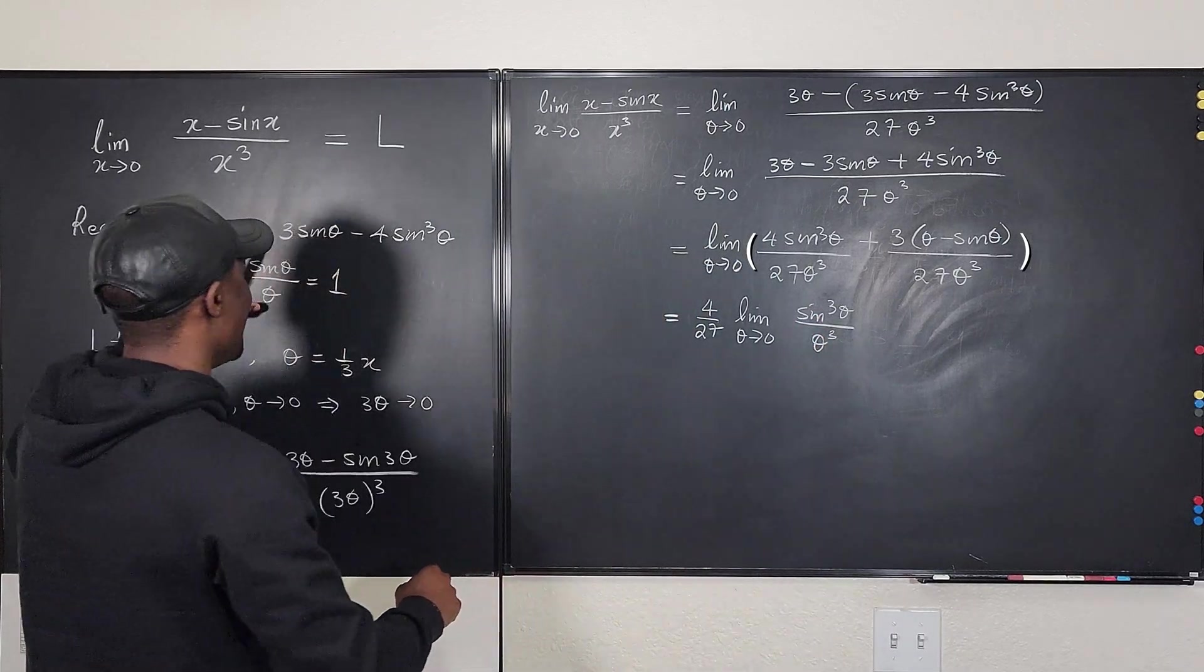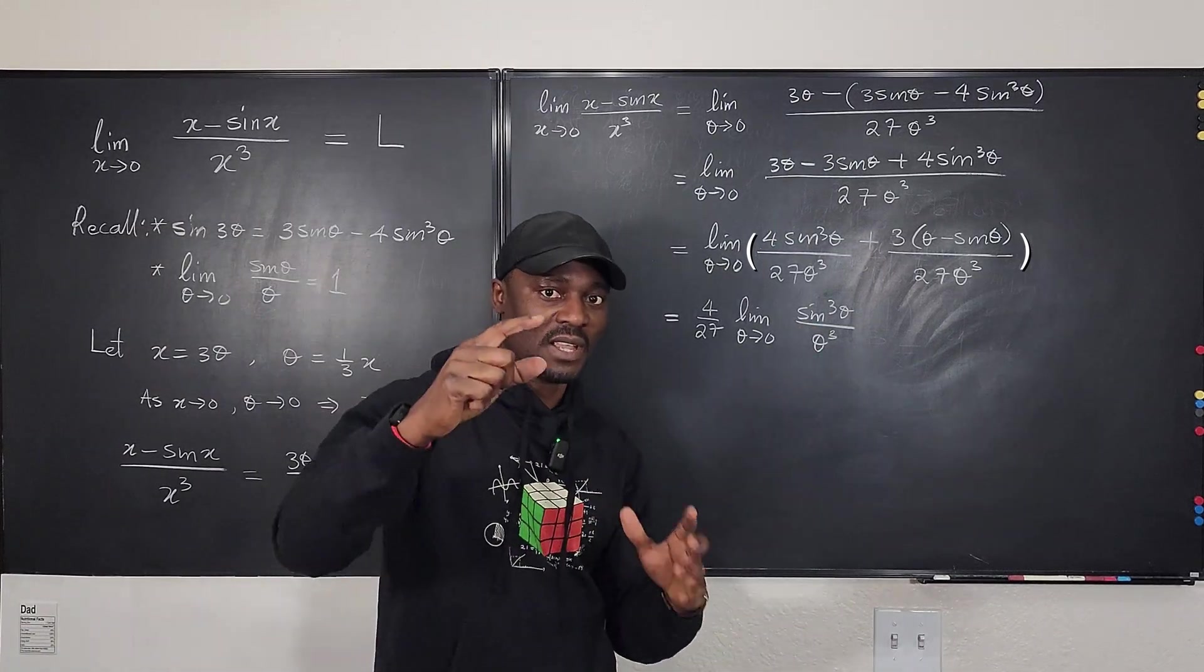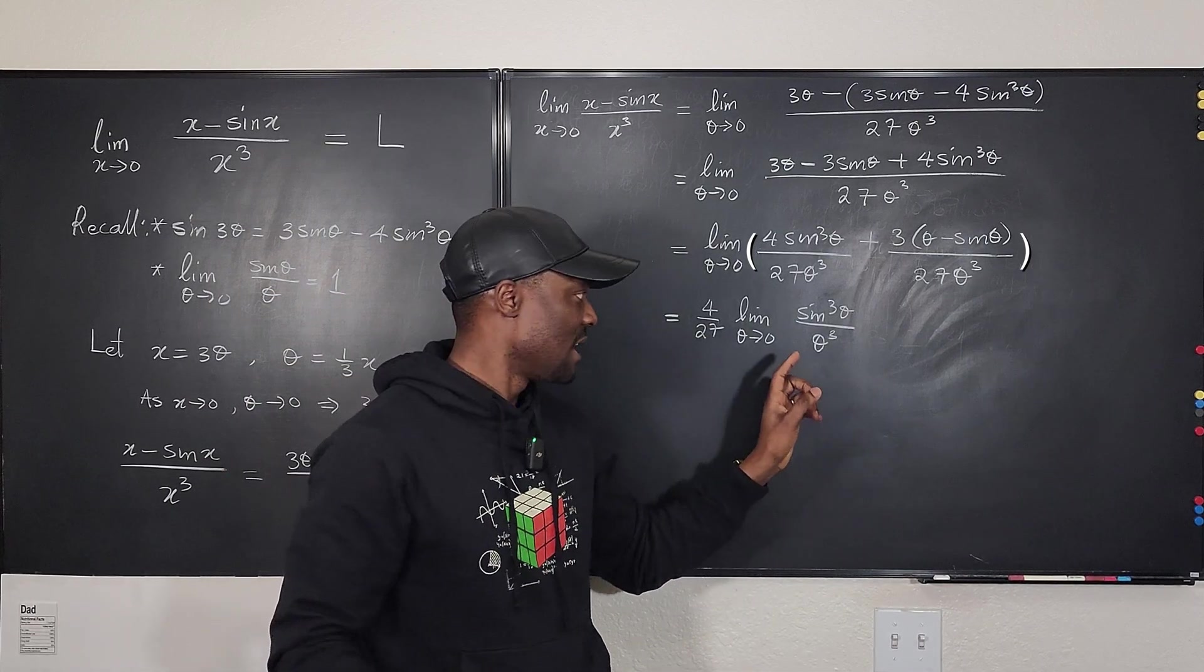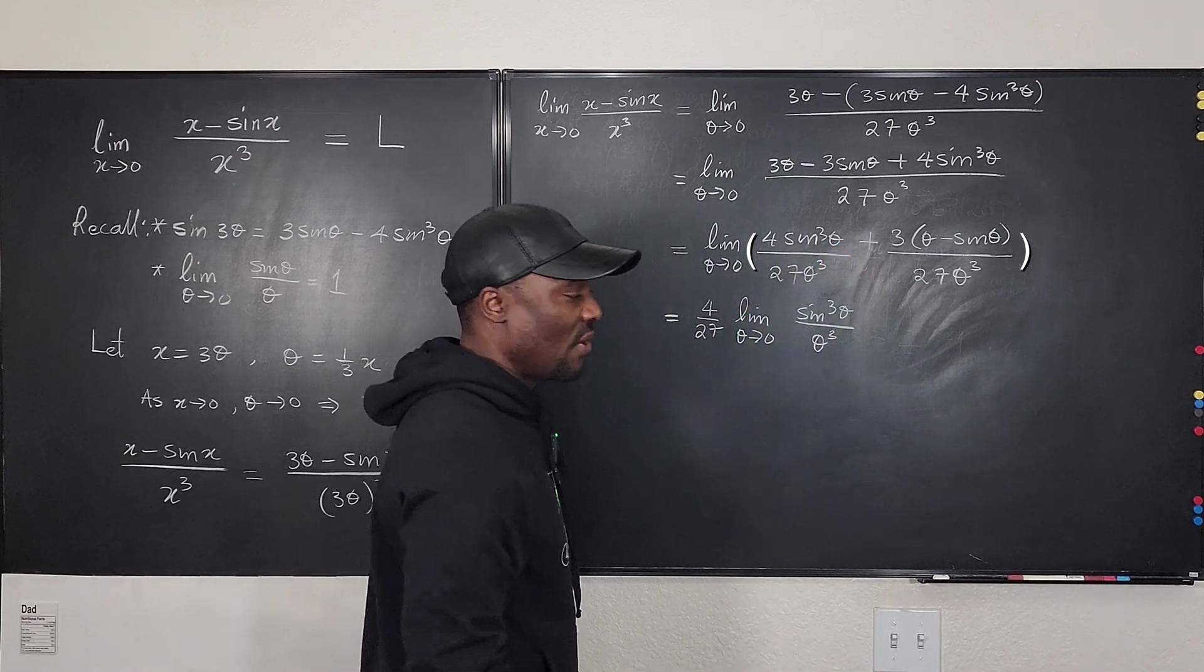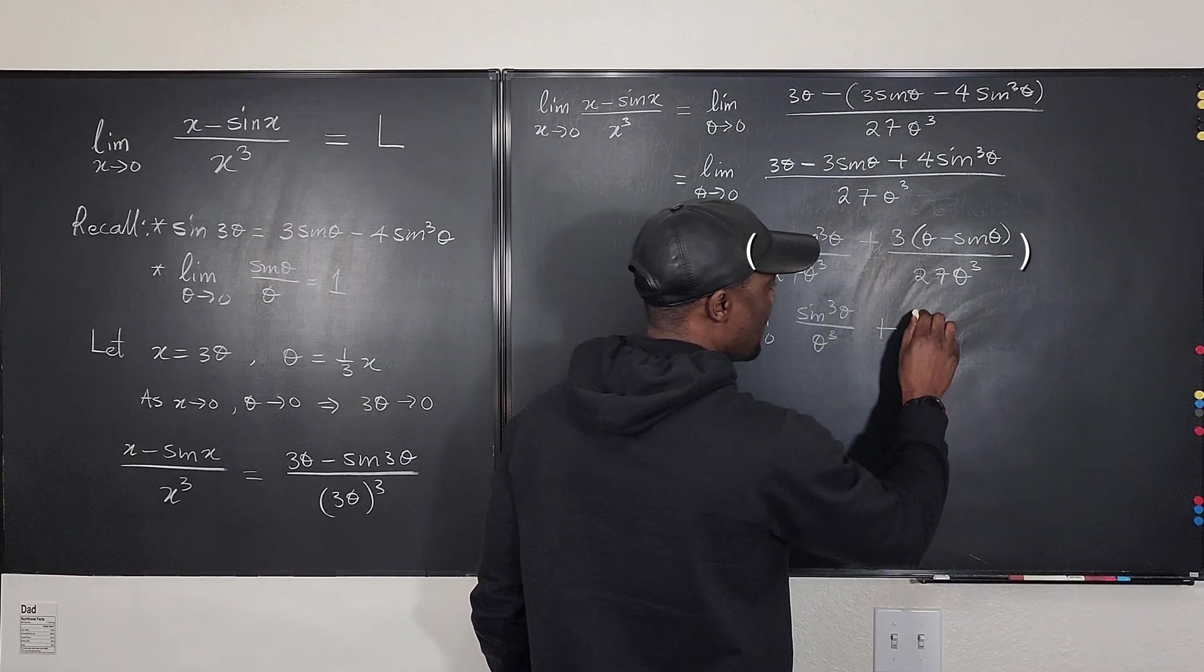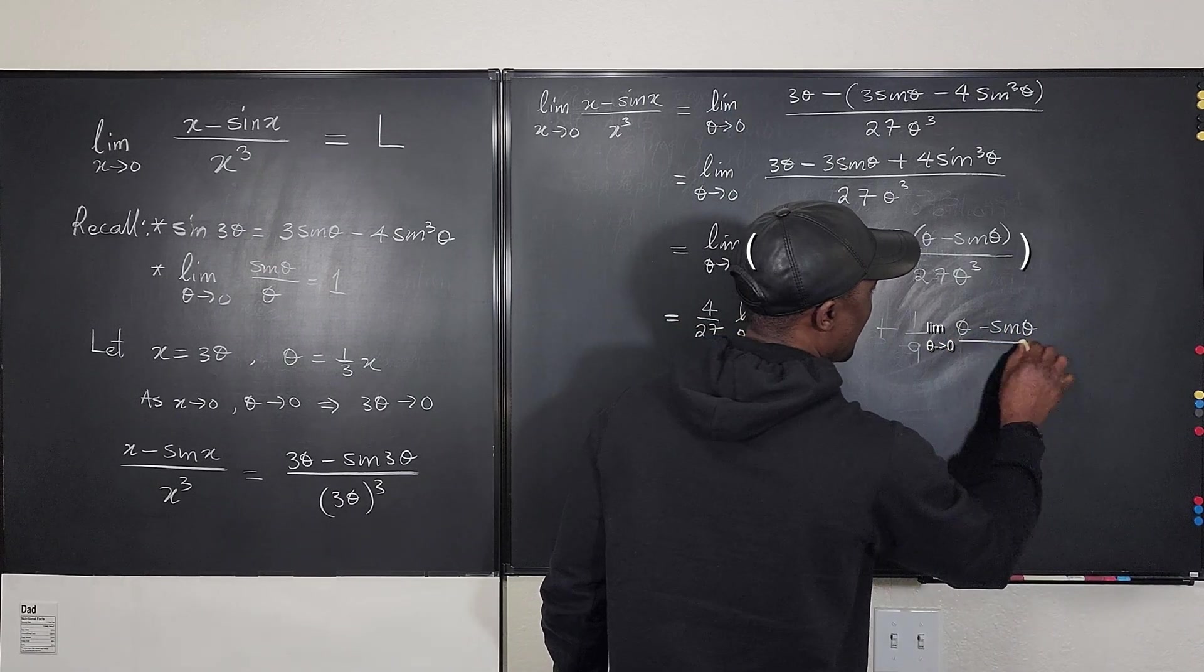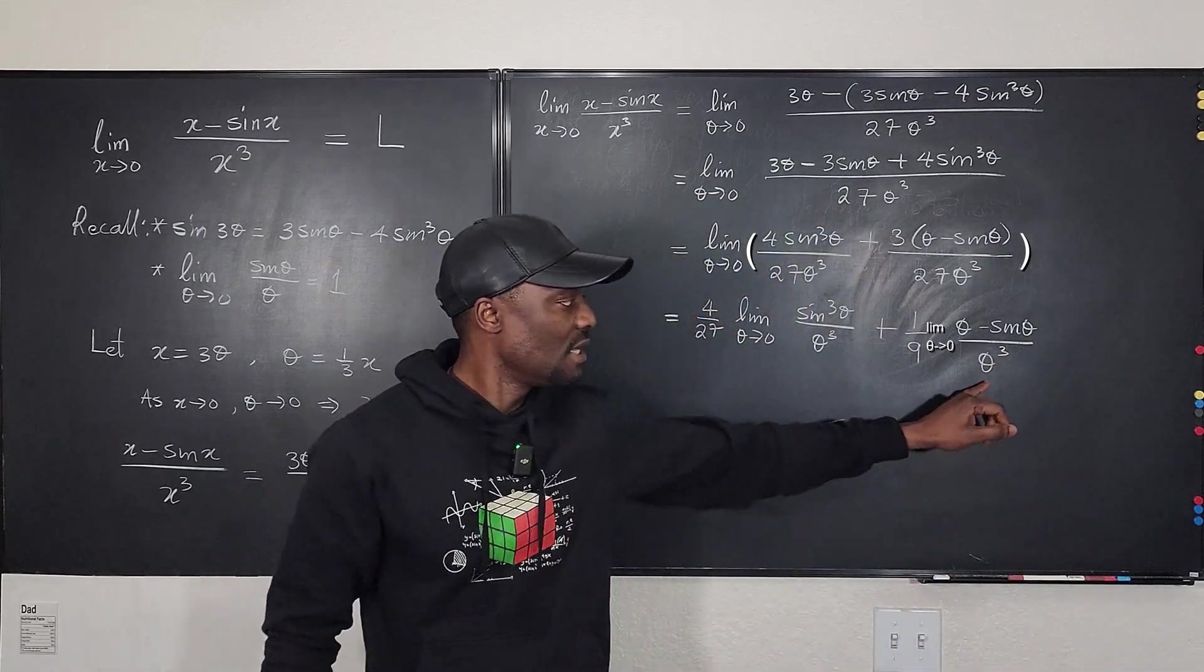That's what I was saying here. Because this you can write as sine theta over theta times sine theta over theta times sine theta over theta. If you take the limit of them using the product rule for limits, you're going to be 1 times 1 times 1, and you're going to get 1. So this gives us 1 ultimately. Plus, this is going to be 3 over 27. That's 1 over 9 multiplied by theta minus sine theta over theta cubed. I think I've seen this before.